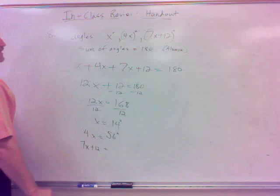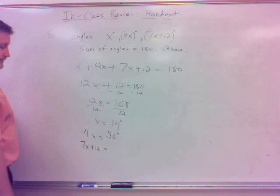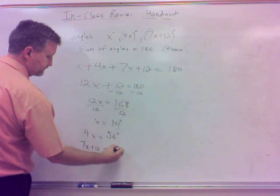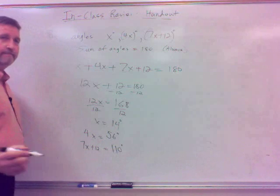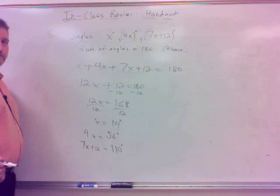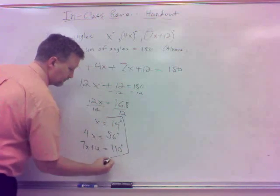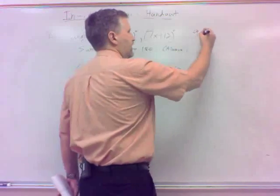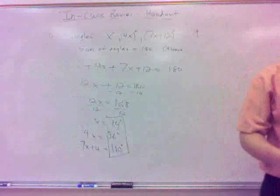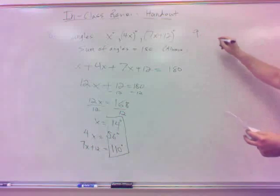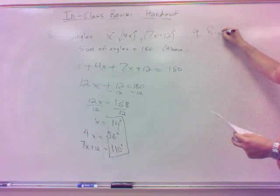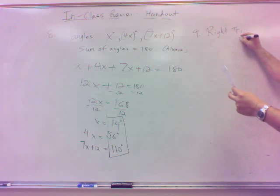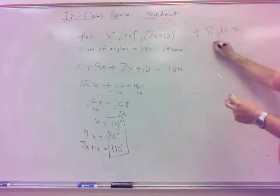So the angles would be, that would be 14 degrees. 4x would be 4 times 14 would be 56 degrees. And then 7x plus 12, the other angle, well, 7 times 14 is 98. Plus 12 would be 110. Did I do that right? 14, 56, 110. Alright.